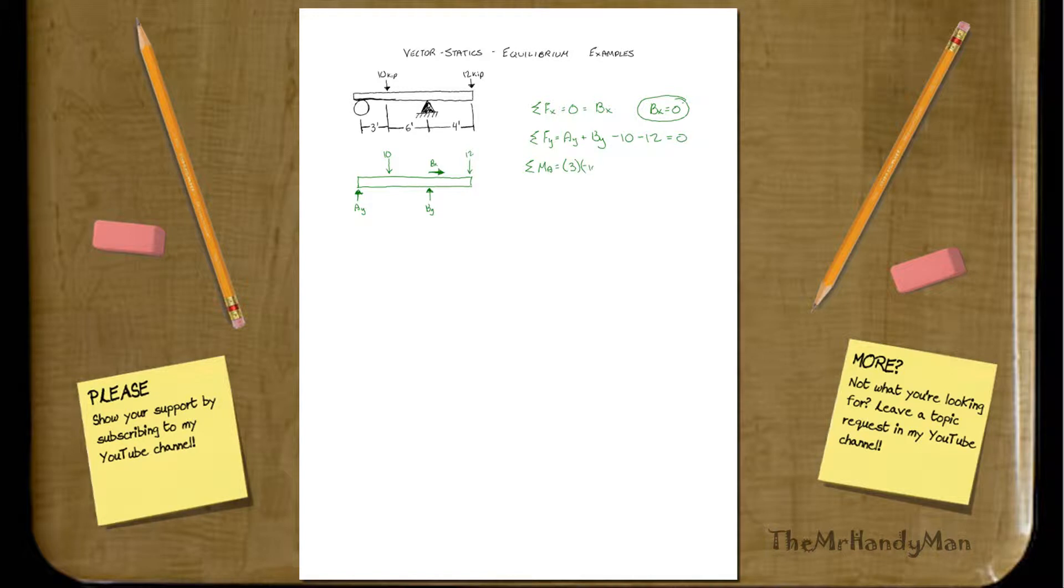So, 3 times negative 10 plus 9 times B of Y and then plus 13 times negative 12. So this all will equal 0, right, to get our moment or whatnot. Basically, you've got to get the moment equal to 0.